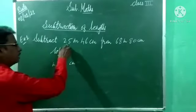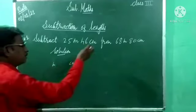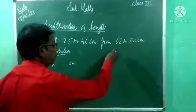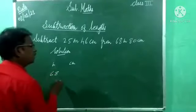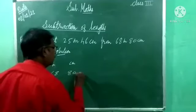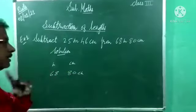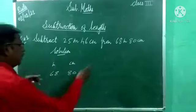But while writing, don't write first number first. We have to do subtract. So always we have to write the bigger number first. So 68 meter, write this, 80 centimeter. If you are writing 68, then next number, whatever may be given there, we have to write that number itself.